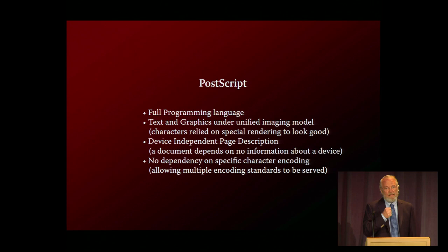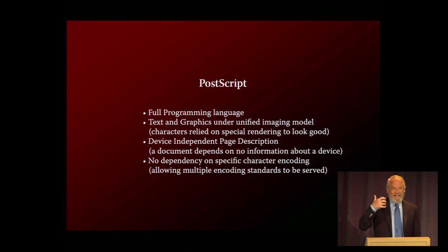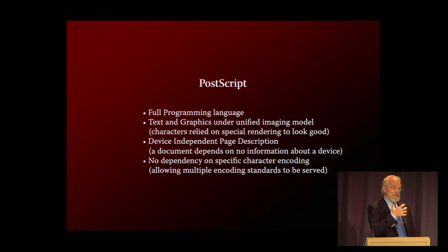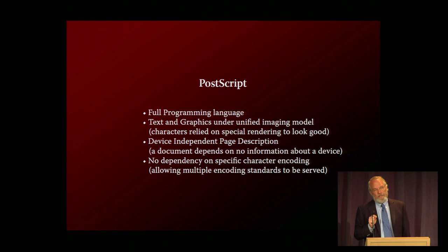We decided we had to make text and graphics under a unified imaging model. What that meant is that we had to make text represented as outlines — analytically represented as character shapes. Then the insurmountable problem was: how do you rasterize those so that they look good? We figured out a way to do that, based on one simple idea: you don't take an outline shape and figure out what bits to turn on. You squeeze and deform the outline shape so that it produces good-looking characters relative to the raster. That's the simple idea that made it all work. So now you could rotate text, scale text, shear text, do anything you want with text, and take the rest of the graphics on the page and do the same thing.